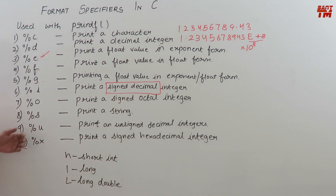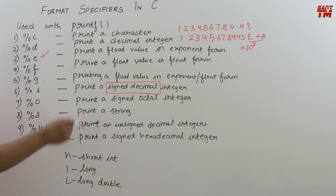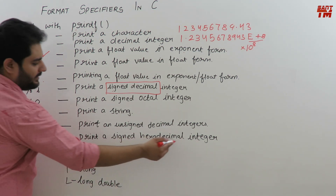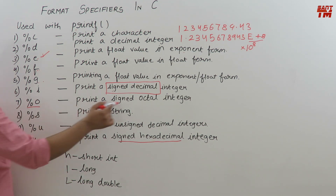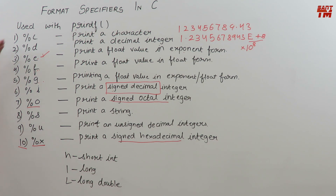This is an important difference: with scanf, %i can scan signed decimal, hexadecimal, and octal integers. But with printf, %i can only print a signed decimal integer. In printf, %x is for printing a signed hexadecimal integer, %o for printing a signed octal integer, and %d for a normal decimal integer. In scanf, %i covers all three, but in printf, each is separate.